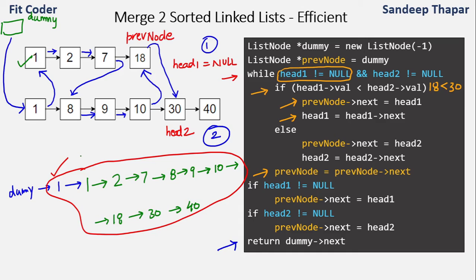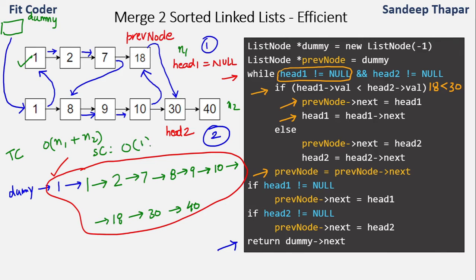What we have done is taken two pointers, and at each step compared the values of both nodes — whichever is smaller, we move that node by one and link it with the previous node. The time complexity of this method is O(n1 + n2), where n1 and n2 are the lengths of the linked lists, and the space complexity is O(1). This is much more efficient than the brute force method.